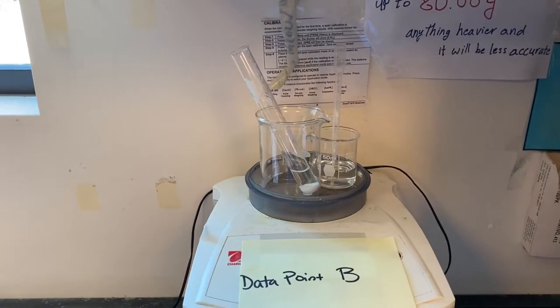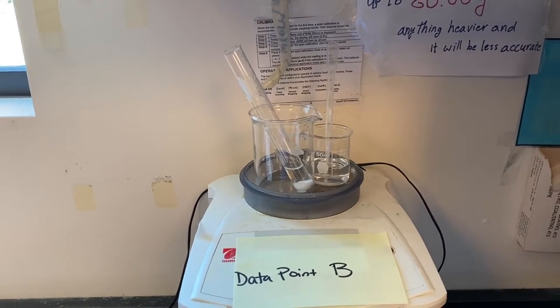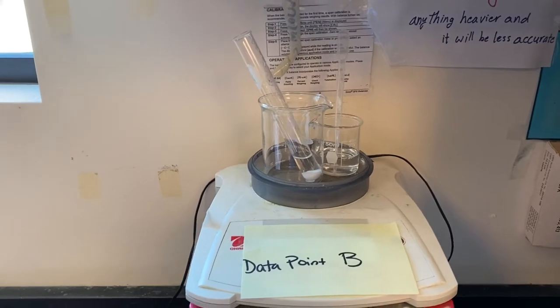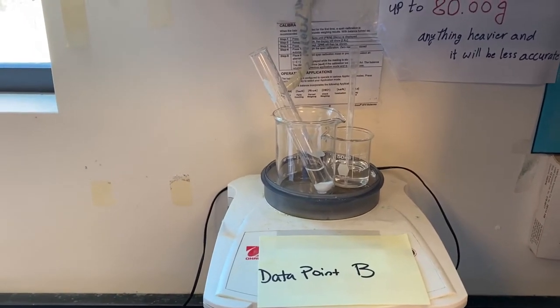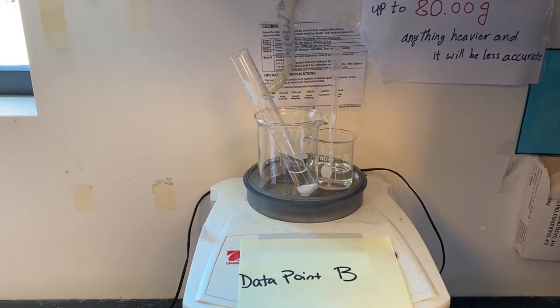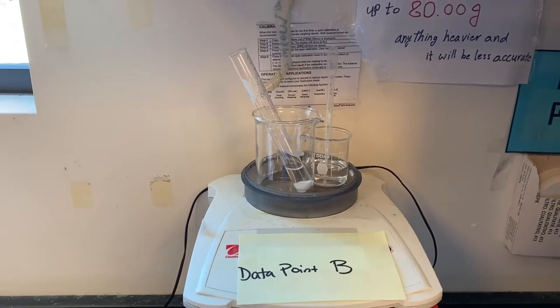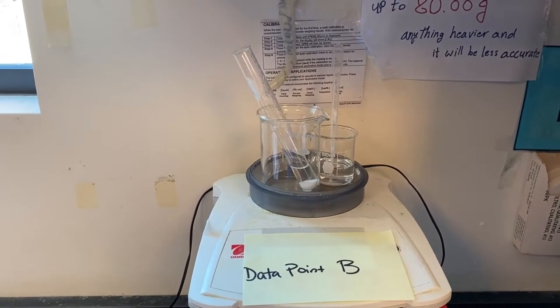So data point B contains the 50 ml beaker, the HCl, the clean dropper, the 150 ml beaker holding the test tube that contains the sodium bicarbonate and the water that you've added. So this is the mass of everything before the reaction.